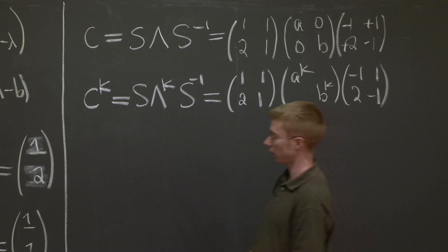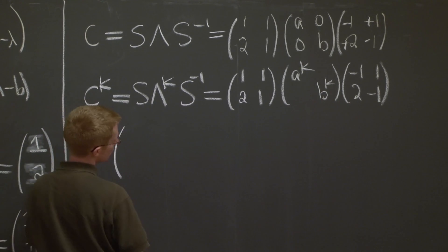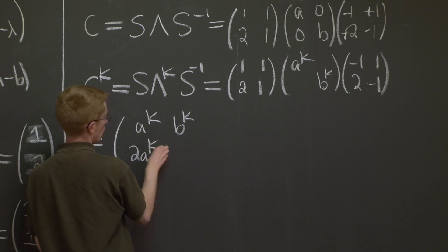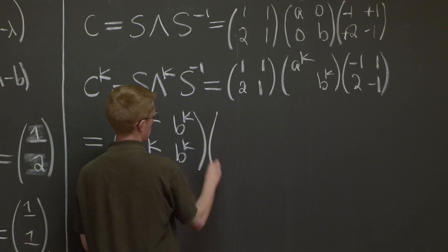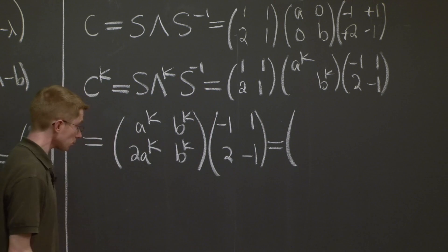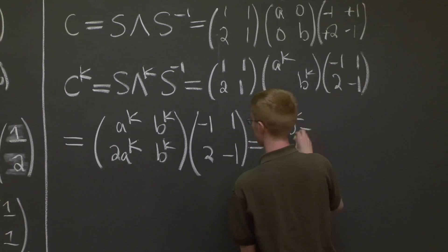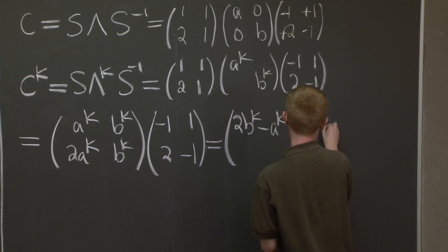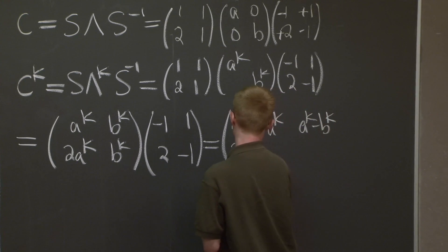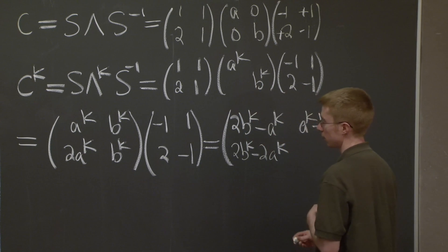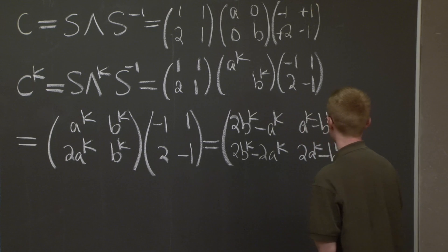Good. And multiplying these matrices together, just do a little arithmetic here, get a bunch of powers of A and B because we take powers of the eigenvalues. We have here, we have 2B to the K minus A to the K, have A to the K minus B to the K, have 2B to the K minus 2A to the K. And finally we get 2A to the K minus B to the K. And this is our K-th power matrix.